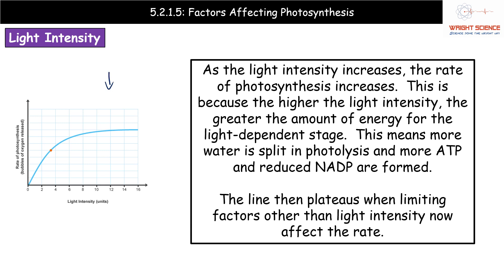Looking at the graph on the left, we can see the general pattern: as we increase light intensity the rate of photosynthesis increases, because higher light intensity provides more energy for the light-dependent stage, more water is split in photolysis, and we generate greater quantities of ATP and reduced NADP. Those feed into the light-independent stage, creating more GP and in turn more TP. Eventually the line plateaus because a factor other than light intensity — such as temperature or CO2 concentration — is now limiting the rate.